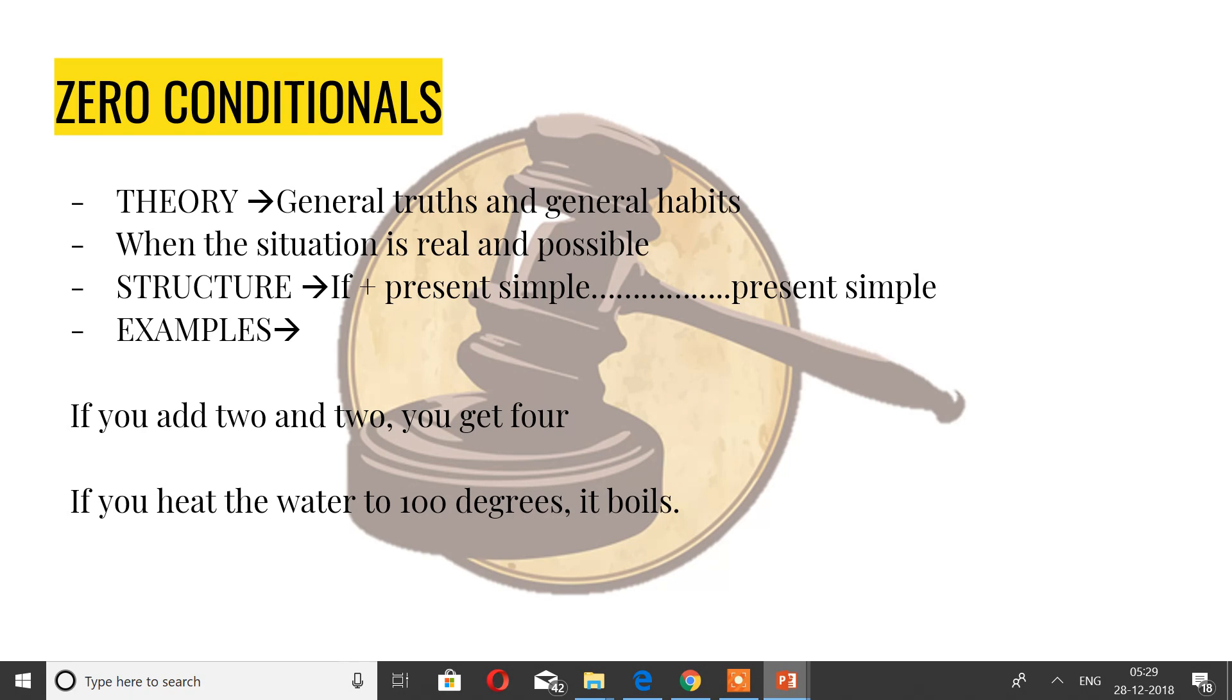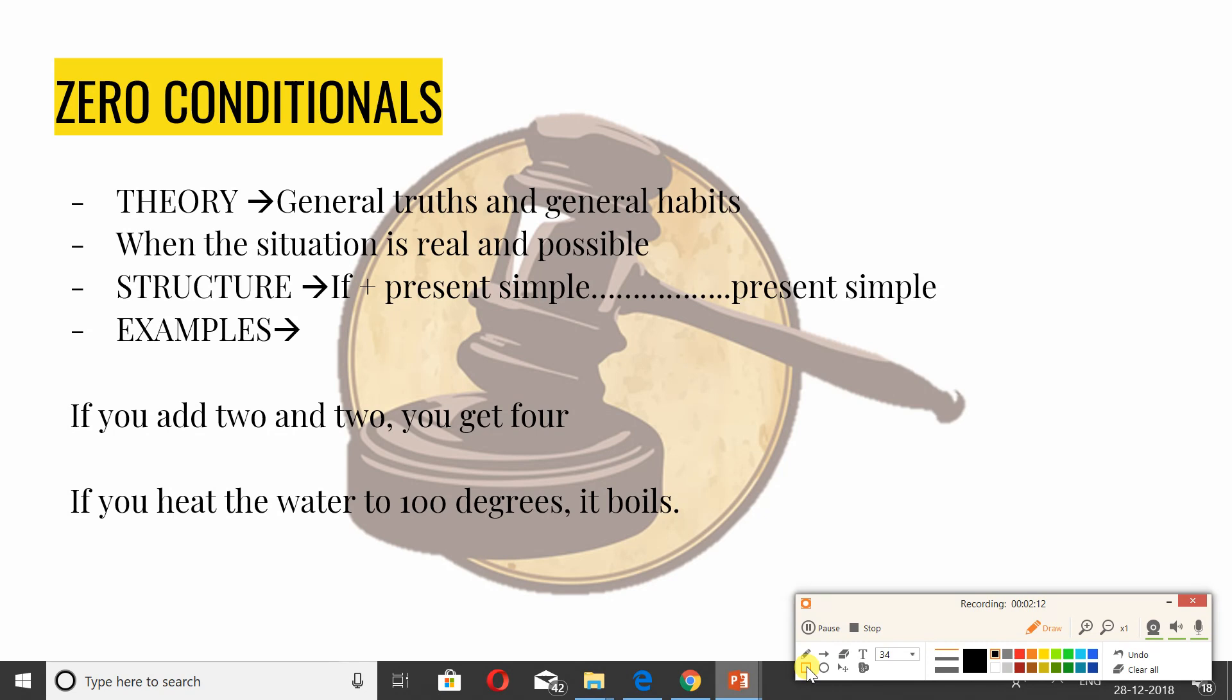Theory of the zero conditional: it's general truths, general habits when the situation is real and possible. The structure is if present simple tense, and after then also present simple tense. Like, if you add two and two, you get four. If you heat water to 100 degrees Celsius, it boils. These are general habits, general facts. You're using add which is present simple tense and get present simple. Boils present simple, heat present simple. Just pay attention to the tenses.